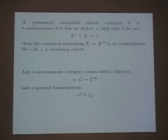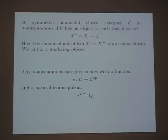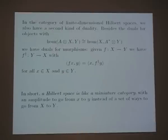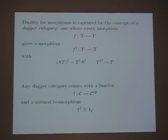The fact about dagger categories looks a lot like the fact about star-autonomous categories, but here it's the star and there it's the dagger. In the category of finite-dimensional Hilbert spaces, you have both, and they're different. So you can get very confused — but by now you can straighten it out.